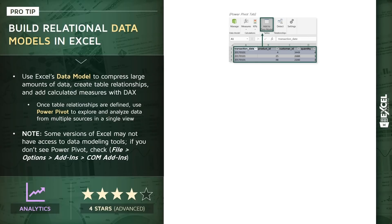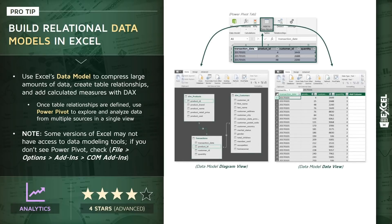Assuming you do have access to the data model, once you've added your tables you'll be able to manage or edit your data model window and see a few different views. On the left we have the diagram view, where tables appear as individual objects and where we can create table relationships based on things called primary and foreign keys. On the right we have the data view, which is a more traditional tabular layout. Once relationships are defined — once you've created what we call a relational data model, which I'm defining as a group of related tables — we can insert a pivot table to explore and analyze the data across all related sources in one single view.